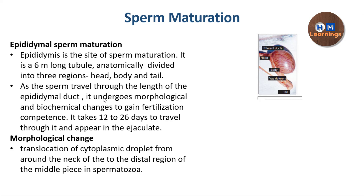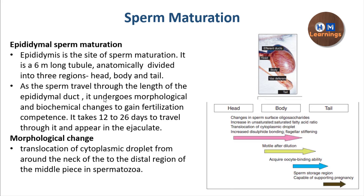The first change is a morphological change involving the translocation of the cytoplasmic droplet from the neck of the sperm to the middle piece of the spermatozoon. You can see in this diagram: this is the head, body, and tail of the epididymis, and the arrows show what changes happen as the sperm moves from head to tail. The translocation of the cytoplasmic droplet occurs as the sperm progresses from the head to the body.